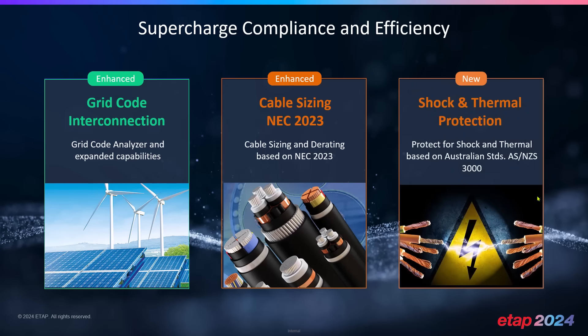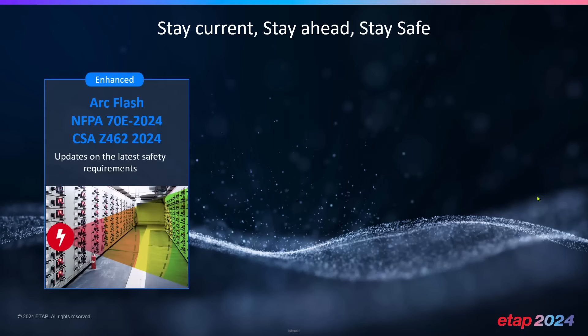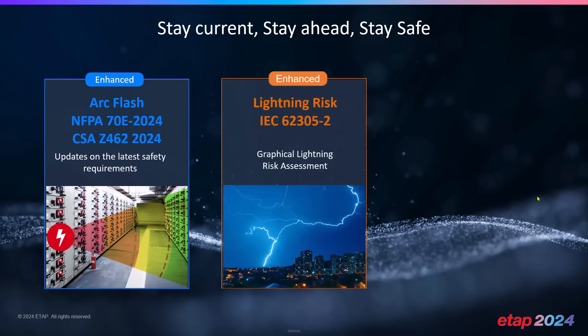We've expanded our offering for Australian standard cable sizing by including shock and thermal protection based on Australian and New Zealand standard 3000. We are staying current, staying ahead, and staying safe — we've continued to enhance our arc flash module by including NFPA 70E 2024 and the Canadian standards.